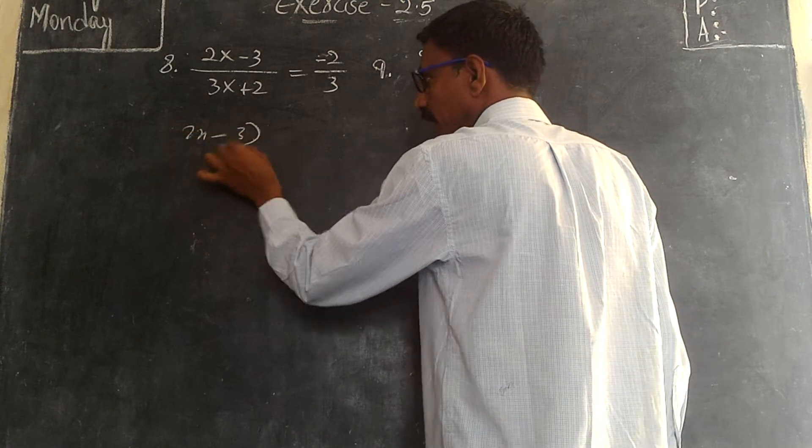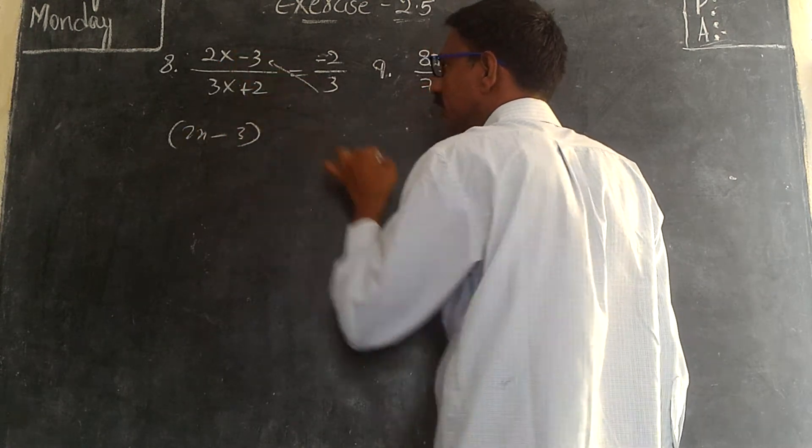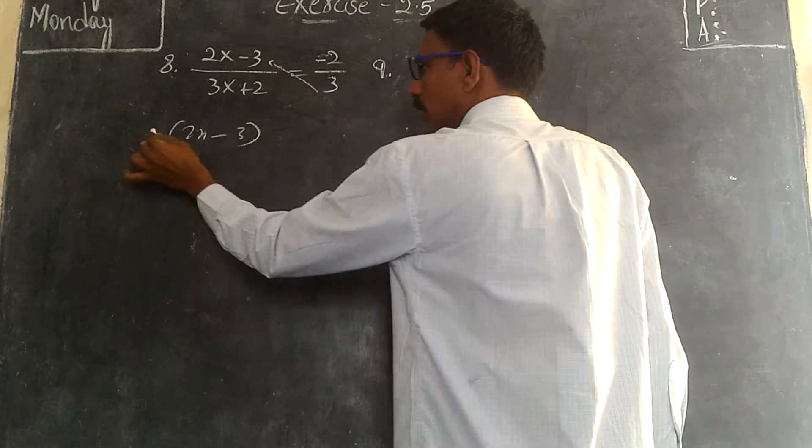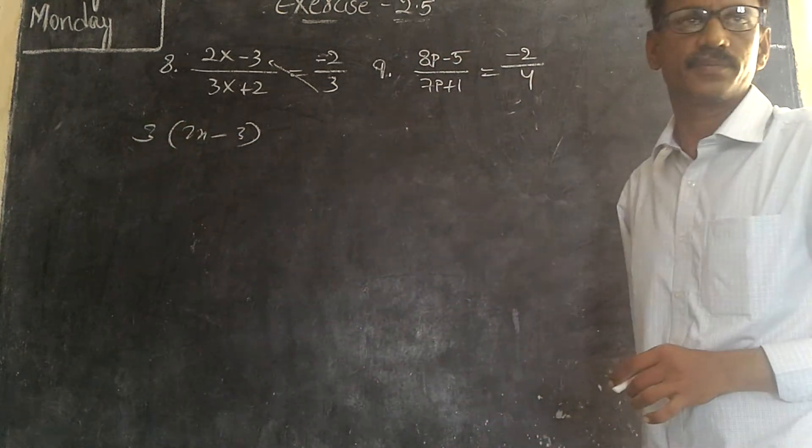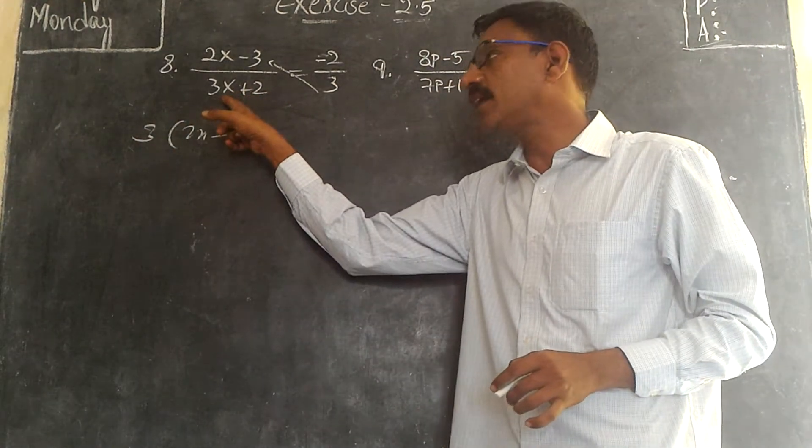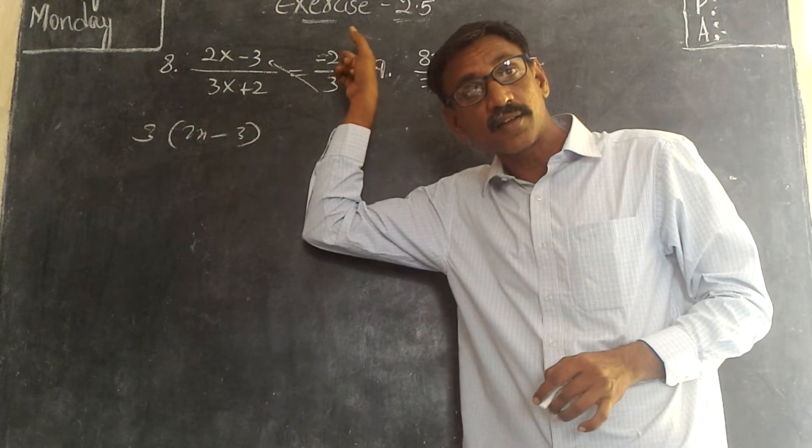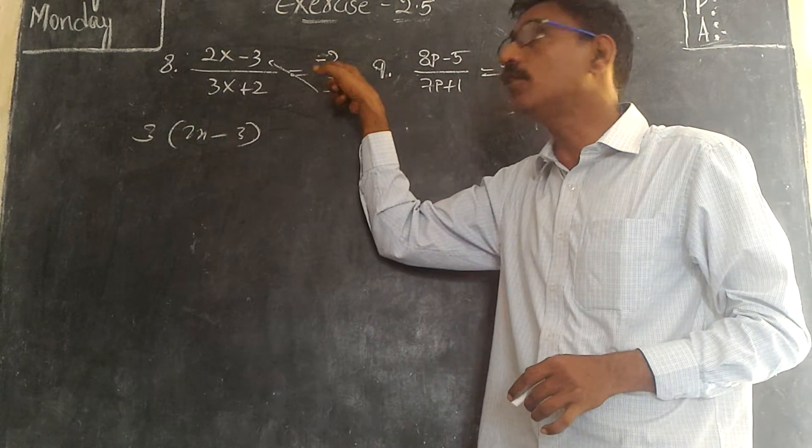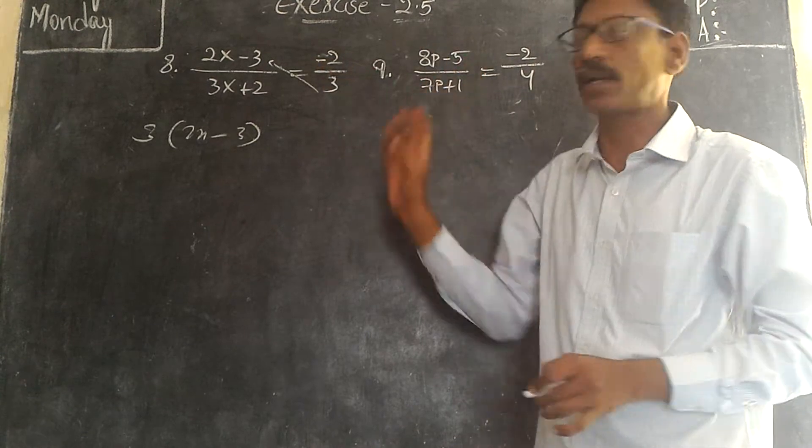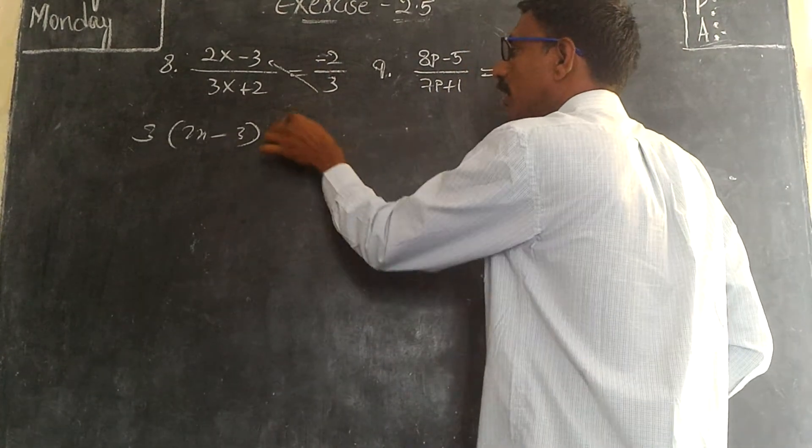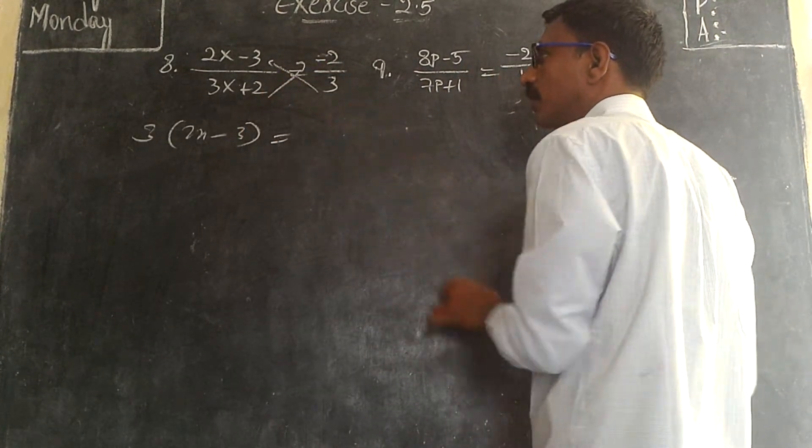2x minus 3 is multiplied by this. That means this, but it is here dividing, will go to that side and multiply. It is multiplied by minus 2. So it equals to, tp equals to, and this is multiplied with this one, minus 2 into 3x plus 2.